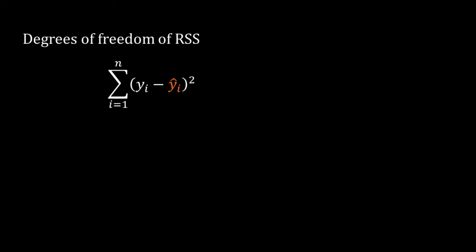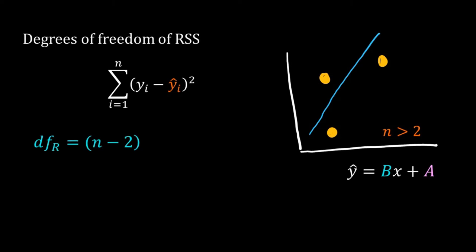First, the degrees of freedom of RSS. RSS measures the error in the fit of the model. Earlier I have dealt with that for simple linear regression. There I argued that with two data points regression is meaningless. We can fit a straight line exactly to two data points. So the number of data points n must be greater than 2. In other words, the degrees of freedom of RSS is n minus 2. I can write this as n minus k minus 1 where k is the number of predictors. For simple linear regression we have only one predictor x so k is equal to 1.